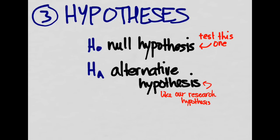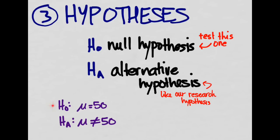Let me give you an example. Let's say we want to prove that the mean of a population is not equal to 50 — that is our research hypothesis and our alternative hypothesis. We're going to say innocent until proven guilty, so we actually try to test the opposite: the null hypothesis would be that the mean is 50. We could also have a study where we want to show that the mean is greater than 50, which would be our alternative hypothesis, and the null would be that the mean is less than or equal to 50.